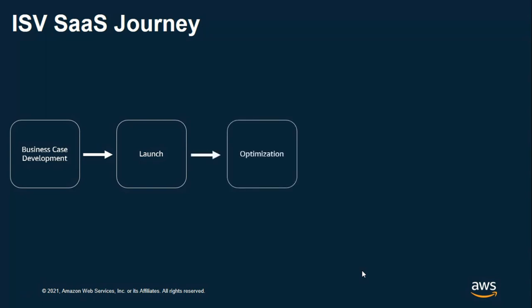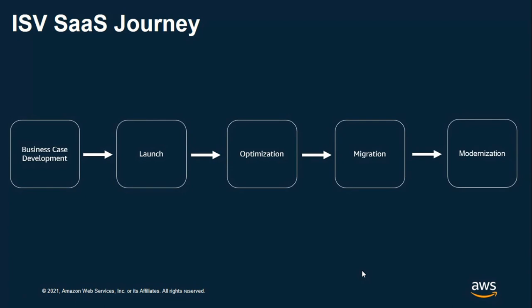As ISVs start onboarding new customers to SaaS, they begin optimizing their environment and ensuring that their deployment follows cloud best practices. In the next phase, ISVs develop migration plans and start migrating their existing on-prem customers to SaaS while continuing to optimize their SaaS environment. This really takes them to the modernization phase, where ISVs start modernizing their application on modern cloud primitives like containers and serverless, and start adopting advanced services like Connect, Redshift, SageMaker, and Pinpoint to introduce new compelling features. The net goal is that the ISV completely reorients their customer experience of software delivery, having refactored or developed a multi-tenant architecture using cloud-native services like API Gateway and Lambda.